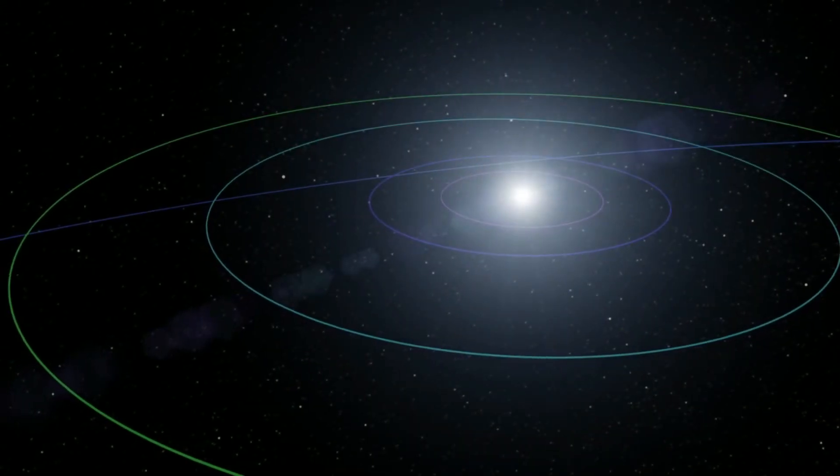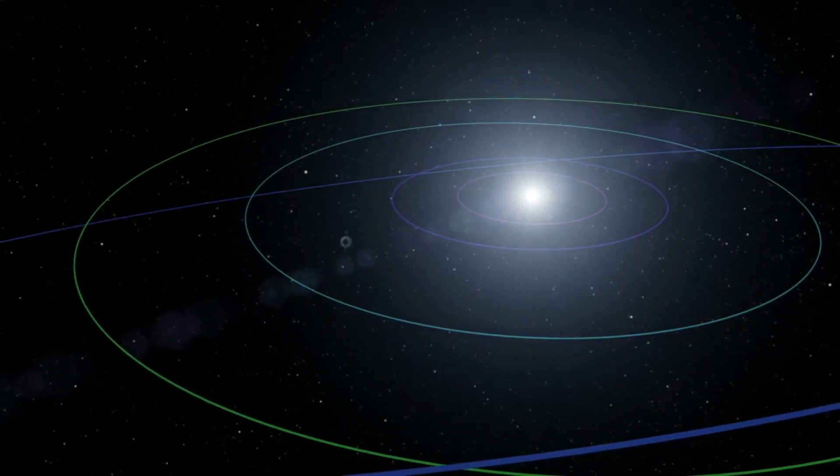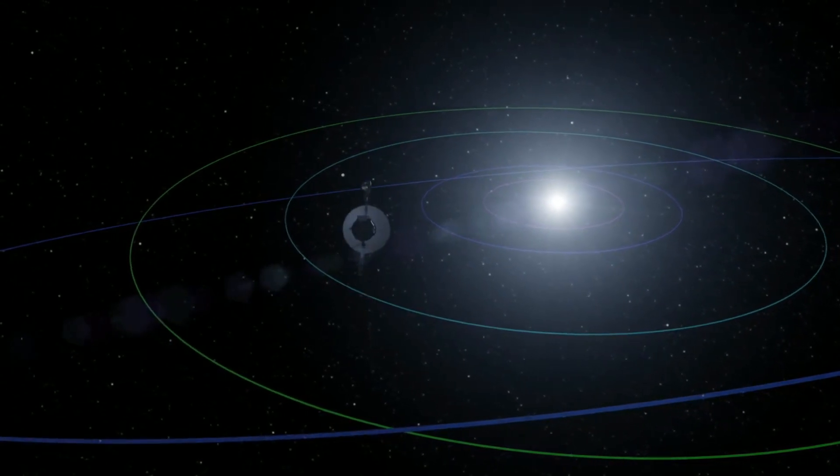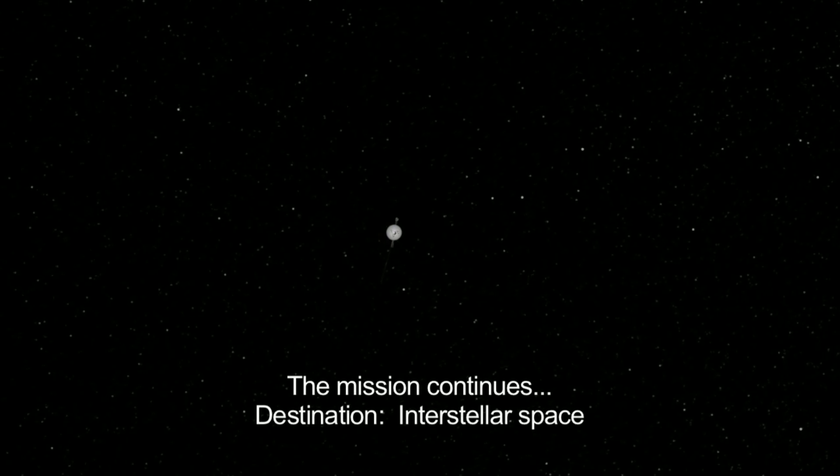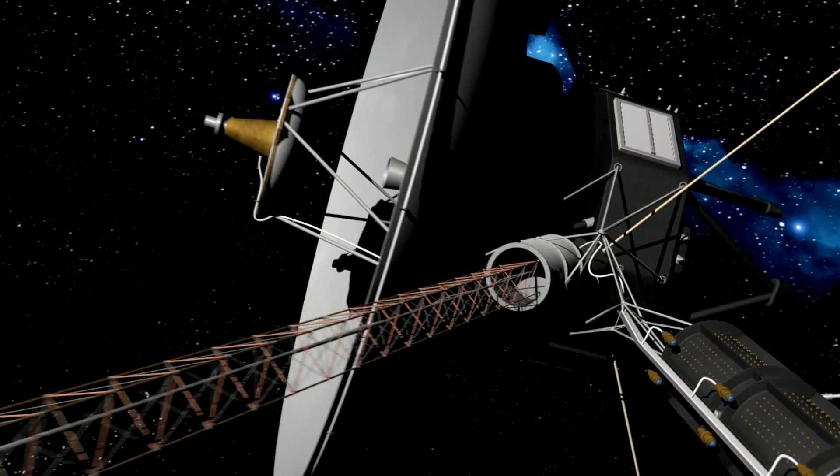The Voyagers' journey didn't end with their planetary encounters. Voyager 1 made history in 2012, when it became the first human-made object to leave the protective bubble of our solar system, known as the heliosphere. It entered interstellar space, becoming a beacon of human exploration in the vast cosmos. It is now moving further into the darkness of space.